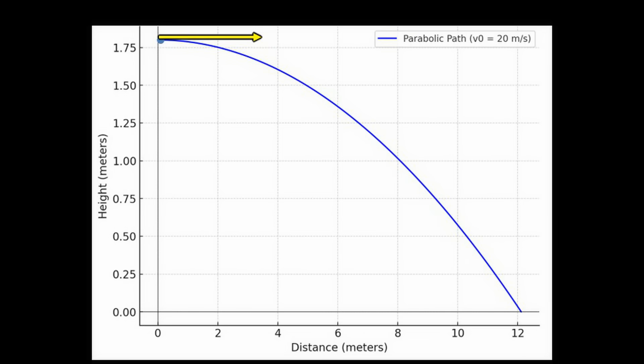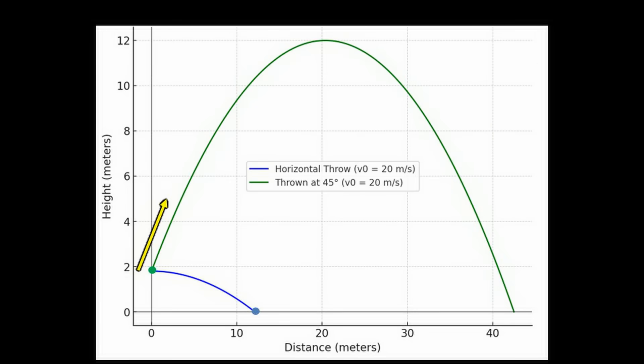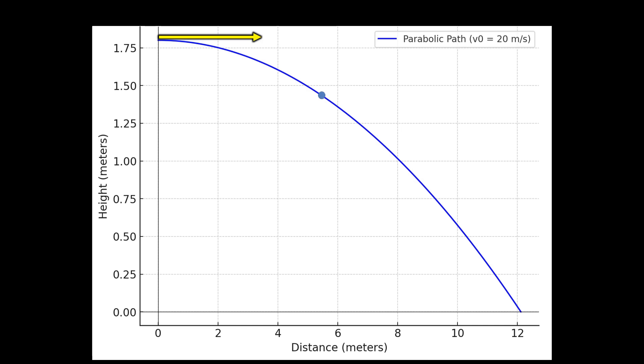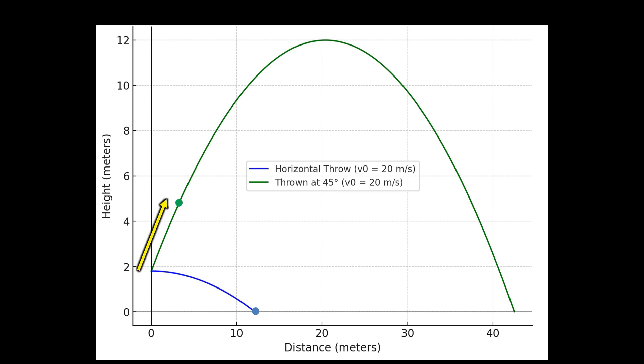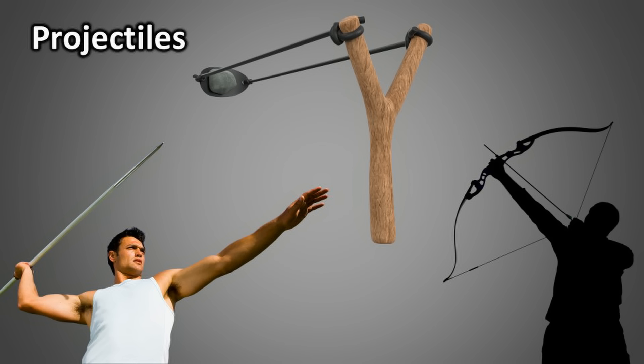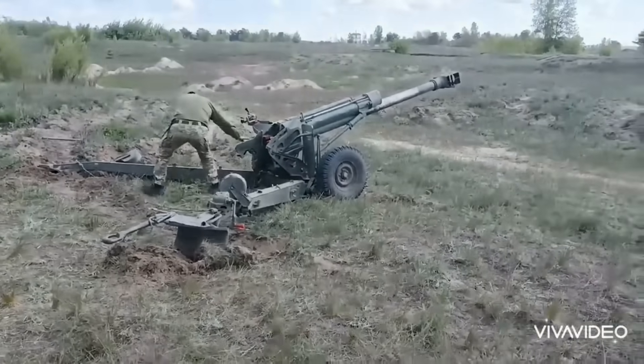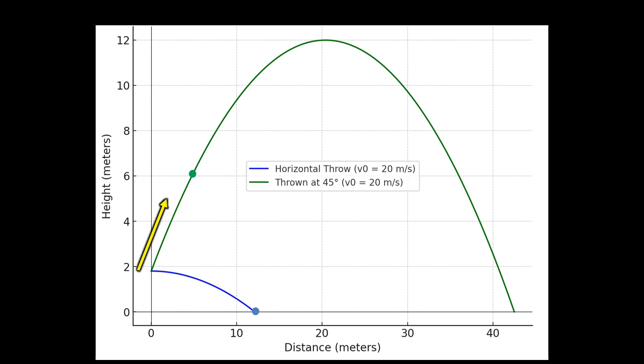When we throw a ball and want it to travel the farthest distance, it is not enough to throw it horizontally. We need to throw it at an angle. If you throw it horizontally, the ball will fall down quickly, limiting how far it can go. However, when you throw it at an angle, the ball goes higher, taking longer to fall, which allows it to travel a greater distance horizontally. This path is called a parabolic trajectory. Almost all projectiles, whether it's a bullet or a cannon shell, follow a parabolic path.